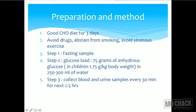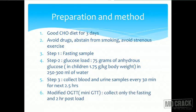Once the glucose load is given, blood and urine are collected every 30 minutes for two and a half hours. We will have samples at fasting, 30, 60, 90, 120, and 150 minutes, though nowadays it is considered sufficient to take the 120-minute sample. Some go up to 150 minutes. In the modified OGTT or mini OGTT, only two samples are taken: the fasting sample and the two-hour sample, along with urine samples.